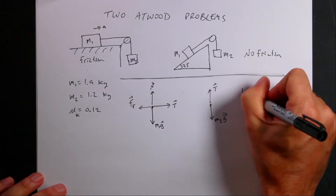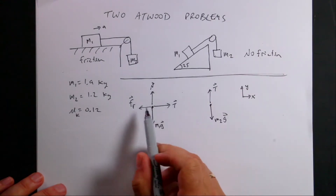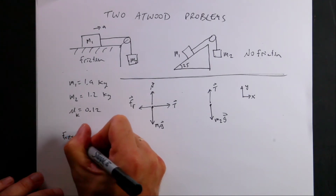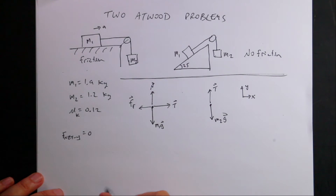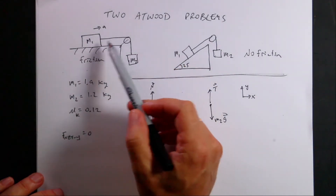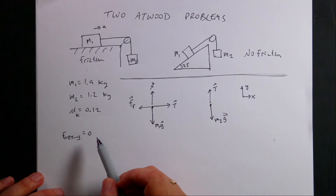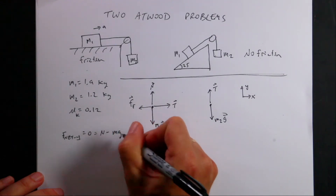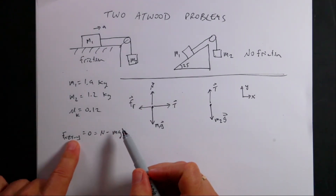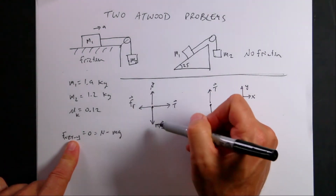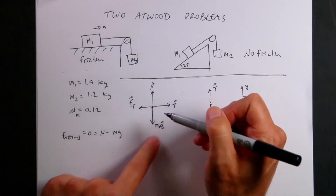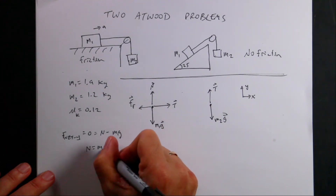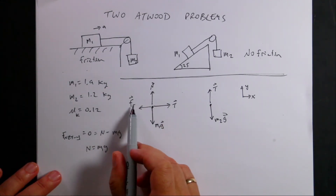I'm going to pick X and Y as my coordinate system. For mass 1, F_net_Y equals zero, because if the block stays on the table it doesn't accelerate up or down. So N minus M1g equals zero, giving N equals M1g. Be careful — you have to draw the diagram; don't always jump in and say N equals Mg, because that's not always true. I need N to find the frictional force.